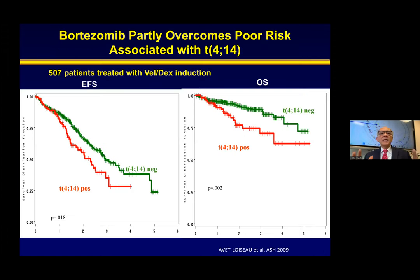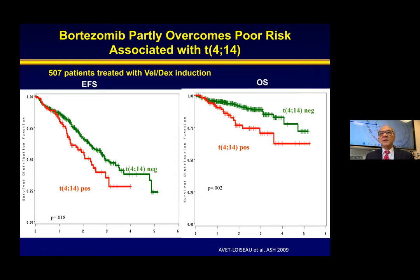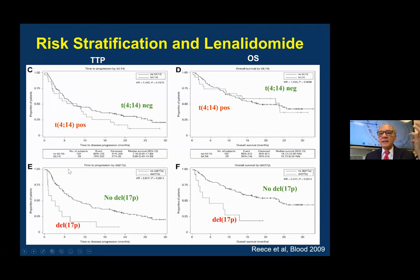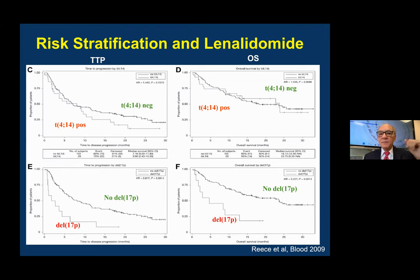To give an example, t(4;14) myeloma is considered high-risk. But when we use bortezomib as a treatment, you could see that the two survival curves come closer — meaning patients with t(4;14) have similar survival to those without. So we do improve outcomes. Similarly, with lenalidomide in t(4;14) patients, the curves have become overlapping, so lenalidomide helps these patients improve their outcome. But in 17p deletion, the curves are separated, telling us that by itself it's not adequate. This is how we study how to treat aggressive disease even better.